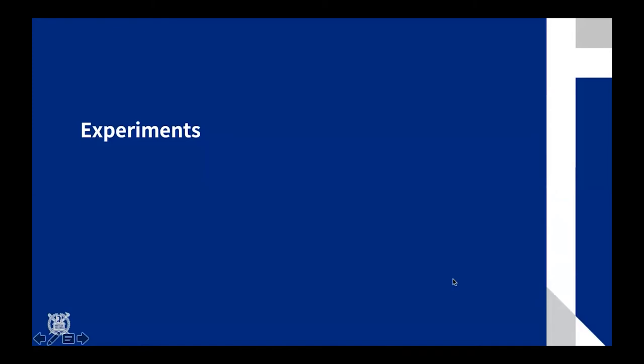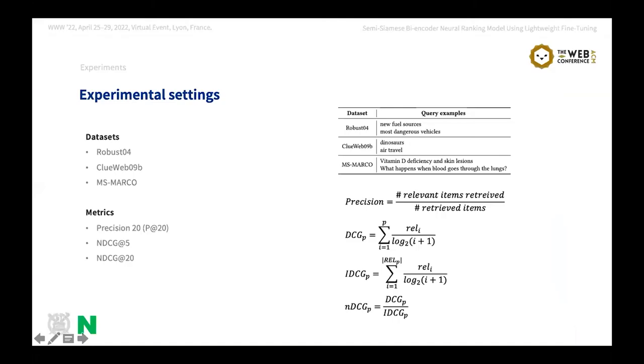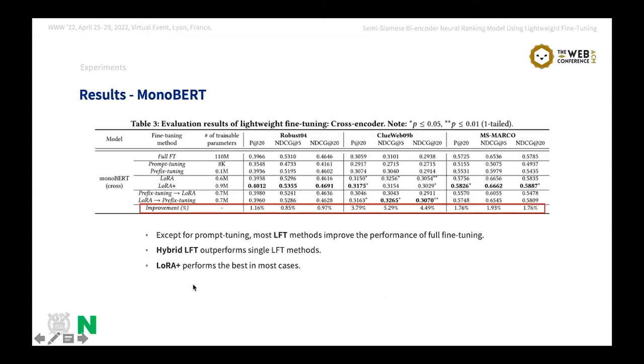And from now, I'll present the experimental results and show how effective our semi-Siamese LFT methods are. We use three datasets, Robust, Clueb, and MS-Marco. Compared to MS-Marco, Robust and Clueb have shorter and more keyword-like queries. For example, query examples of Robust and Clueb are composed of only a few words, and MS-Marco's queries are longer and more like full sentences. For evaluation metrics, we use three metrics, Precision@20 and NDCG@5 and 20.